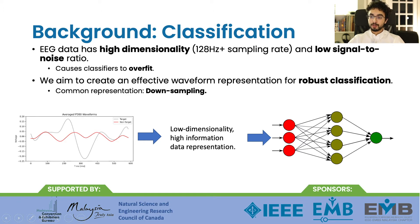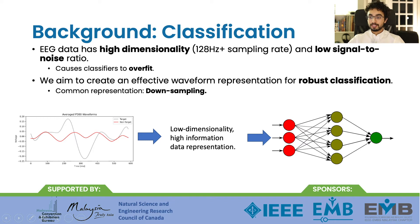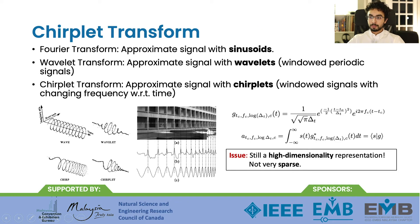To classify the P300 brainwave, some method of reducing dimensionality is required. The go-to method is downsampling, where the waveform is divided into equally spaced segments and the average waveform value or average energy value is taken within those segments. The goal of this research is to determine the utility of the Adaptive Chirplet Transform in creating low-dimensionality, high-information data representations.